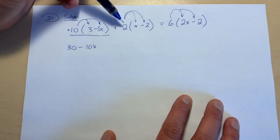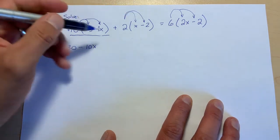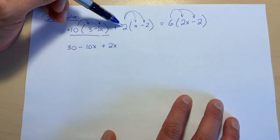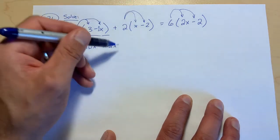Next, 2 times x gives us positive 2x, and positive 2 times negative 2 gives us negative 4.